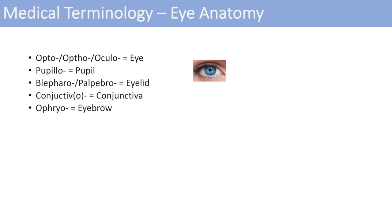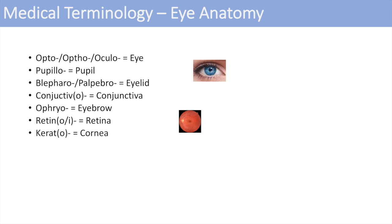The next one is opfrio, which stands for the eyebrow — you rarely hear this term. The next one is retino, which stands for the retina. You might have heard of retinal detachment or retinitis. The next one is kerato, which stands for the cornea. You might have heard of exposure keratitis — when someone has trouble closing their eye and gets too much light exposure on the cornea, you can get inflammation of the cornea.